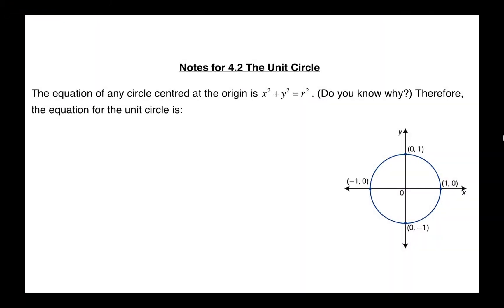The equation of any circle that's centered on the origin is x squared plus y squared equals r squared. If you take any point Q that's on the circle, then there is this relationship between x, y, and r, which is the Pythagorean relationship: x squared plus y squared equals r squared.